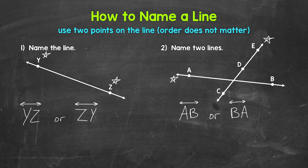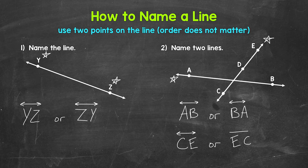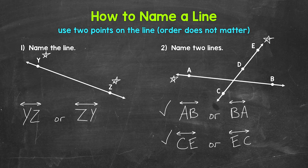Let's use point C and point E. So we can either write this as line CE or line EC. Just to be clear, we can also use points D and C or D and E to name this line as well. So for number two, we named two lines. That's how to name a line — let's move on to line segments.